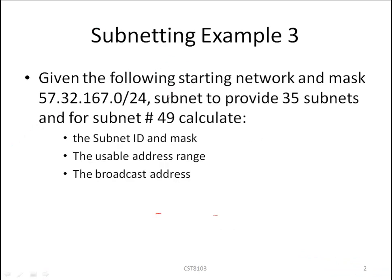In this example you are given the following starting network and mask: 57.32.167.0/24 and you are being asked to subnet to provide at least 35 subnets. Once you've subnetted, you are asked for some additional questions, specifically for subnet number 49. You're asked to calculate the subnet ID and mask, the usable IP address range, and the broadcast address for subnet 49.